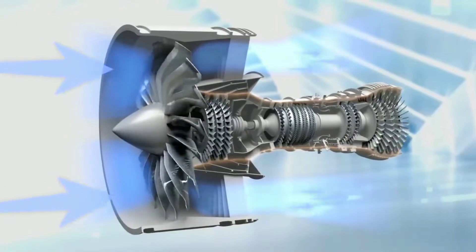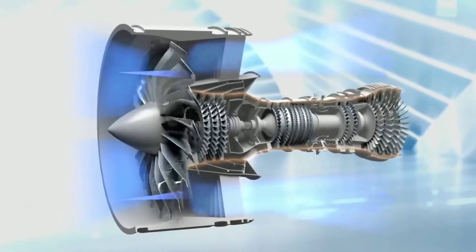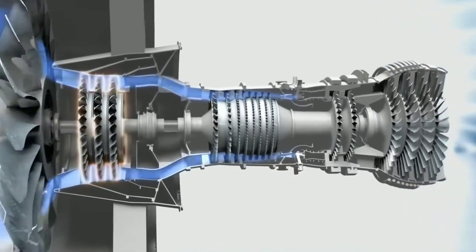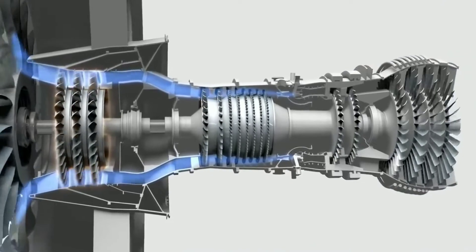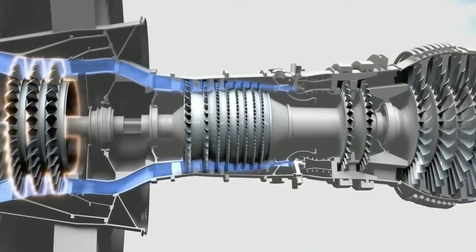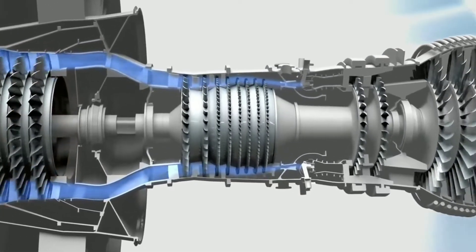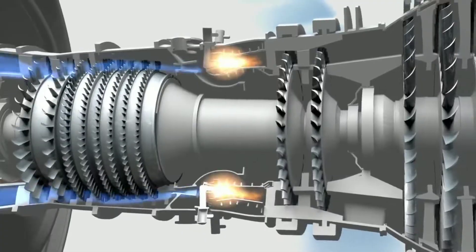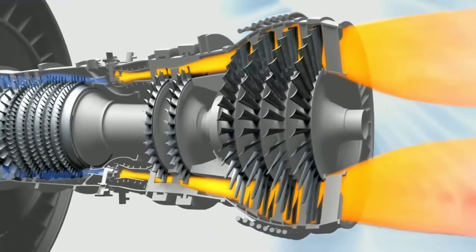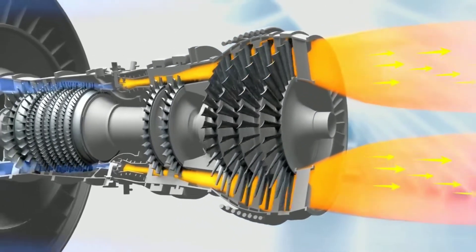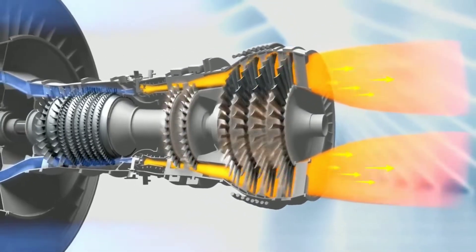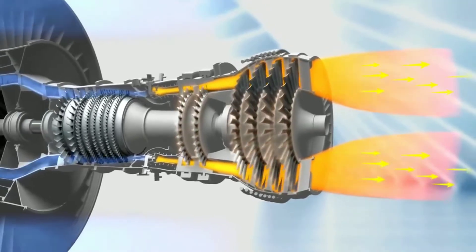The gas turbine engine uses a very simple principle. It takes a large amount of air through its intake, squeezes the air to create high pressure, combusts the fuel with it, and blows the air through the exhaust nozzle with a very high velocity, which results in the aircraft moving forward.